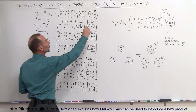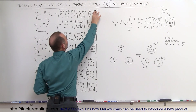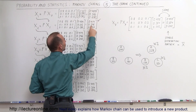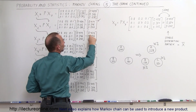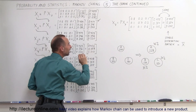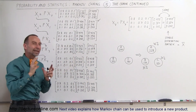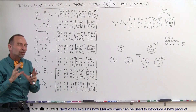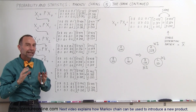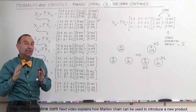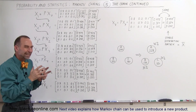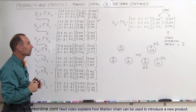Notice that initially the states change quickly. We go from 0.316 to 0.346 to 0.356 to 0.358, and all of a sudden you begin to see the changes become smaller and smaller. It looks like the state matrix begins to converge to a particular value or set of values.